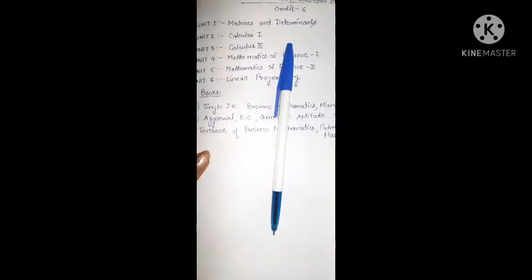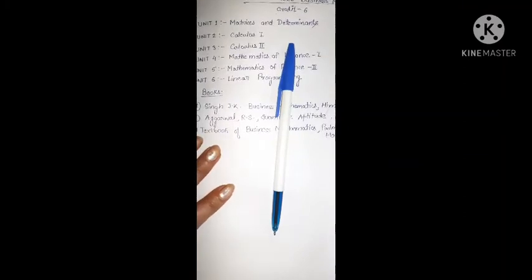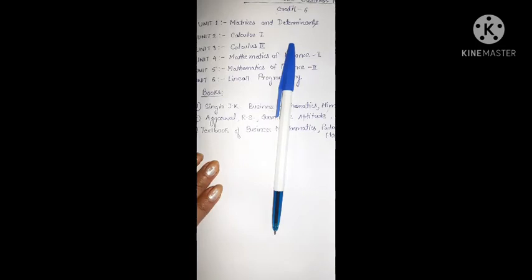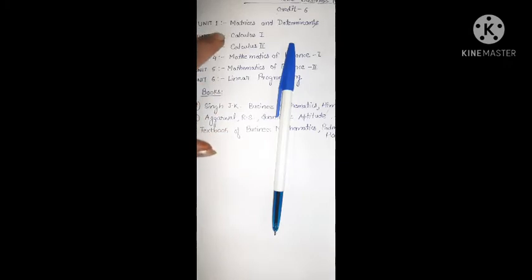Now this paper has total six units. The very first unit is Matrices and Determinants. Those who have studied mathematics in your high secondary level, you all know about matrices and determinants. So some similar or familiar topics are there in matrices and determinants. Two or three topics are different that we will discuss later on.